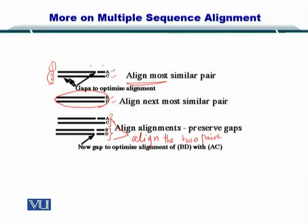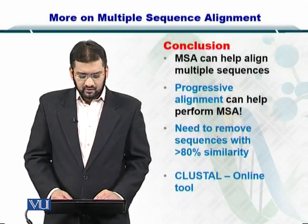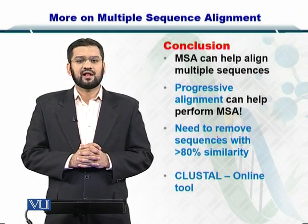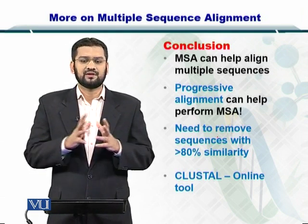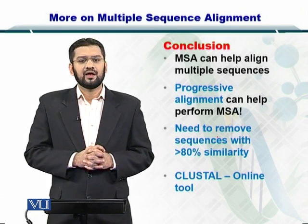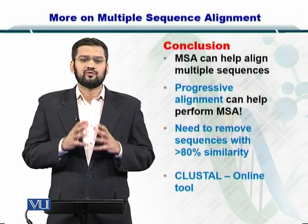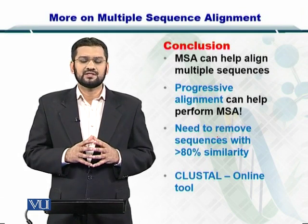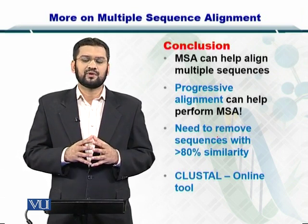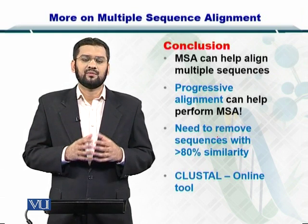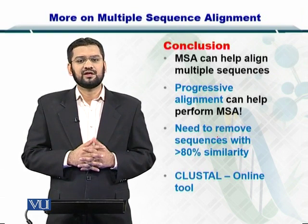This is a very important point to remember. In the first step, you aligned sequences that are similar to each other, thereby creating pairs of sequences, and now you are aligning the pairs themselves. In conclusion, multiple sequence alignment helps you compare multiple sequences at once, find evolutionary relationships, predict secondary structures of proteins, and create phylogenetic trees.